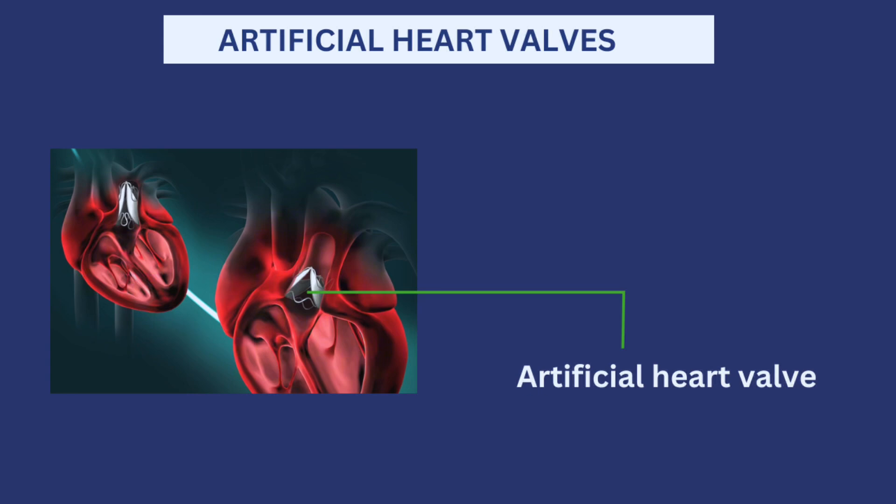Anticoagulants can also be used to prevent heart attack for patients who are at risk, as well as when a patient has been given an artificial heart valve. There are situations where heart valves become weakened or destroyed and patients undergo surgery to have them replaced with an artificial valve. To stop blood clots from forming around that mechanical valve, a patient may also be placed on anticoagulants.